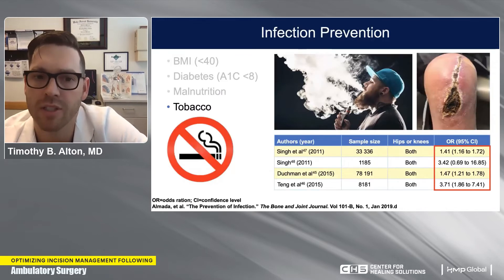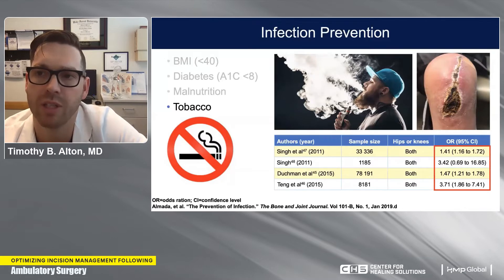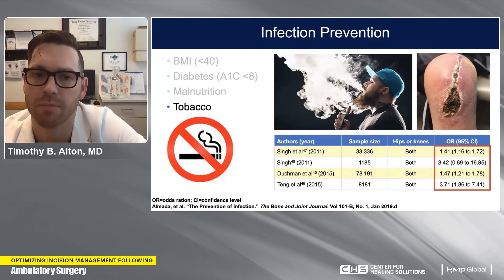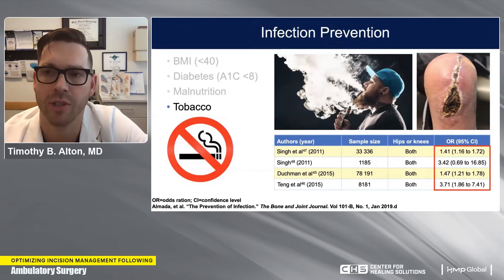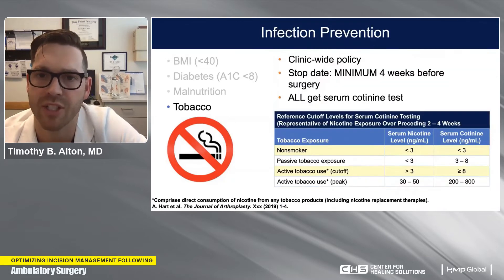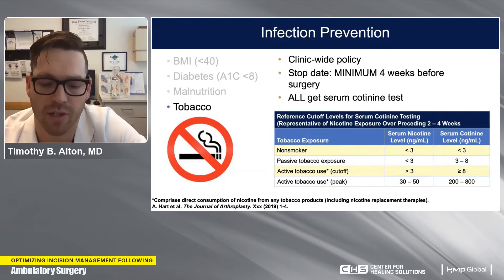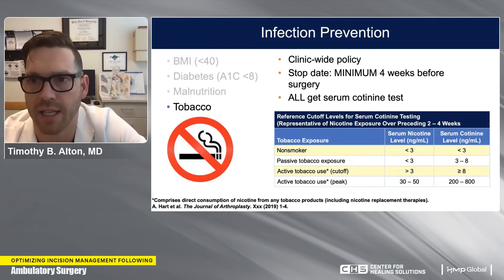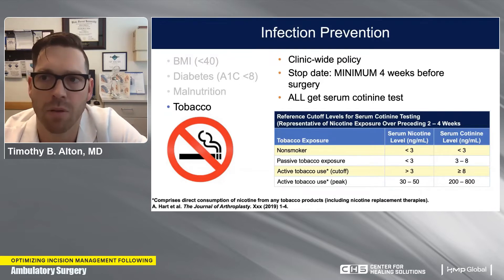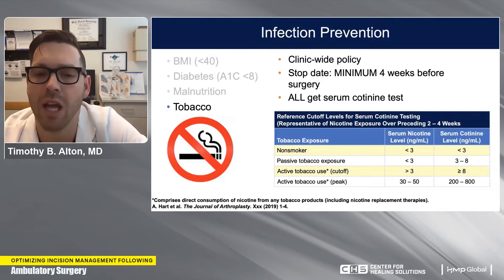Smoking is a significant risk factor. Multiple studies show increased risk of wound healing problems with smoking. We have adopted a policy where patients don't get surgery if they're using tobacco — they must quit and pass a serum cotinine test at minimum four weeks before surgery. The cotinine test tells you whether you're a non-smoker, a passive smoker with secondhand smoke exposure, or actively using. If you don't pass, we have to wait. It's not punitive — it's for the patient's benefit because we know smoking increases their risk of wound healing problems.